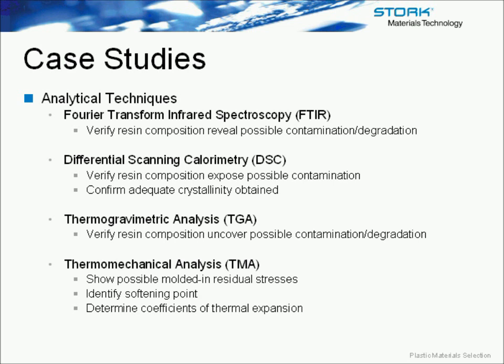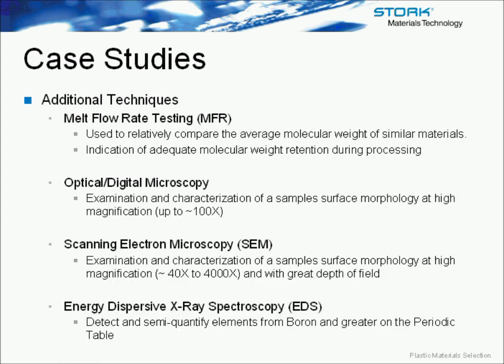In general, these case studies go through what are the key requirements of a part, what material was selected, what the cause of failure was — whether it was contamination of the resin, degradation of the resin, or stress-related — and then recommendations for either changing the material or changing the design. We use a variety of techniques to analyze our failures, including FTIR, DSC, TGA, and TMA. Those look at the resin for contamination and degradation, and also look for molded-in residual stresses and crystallinity.